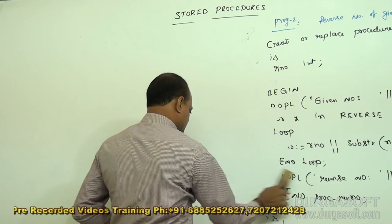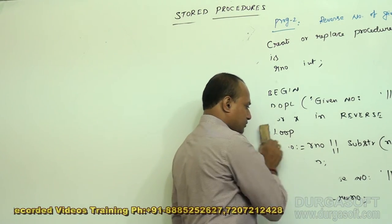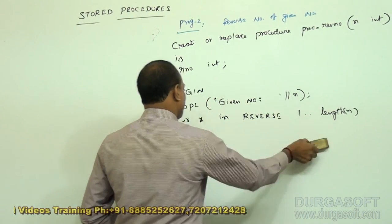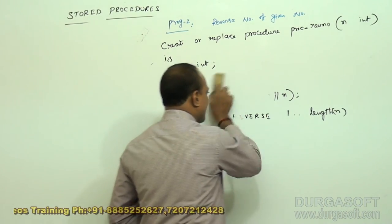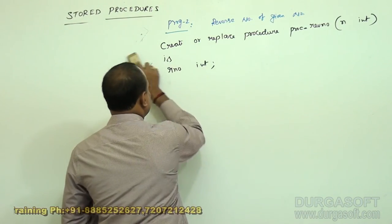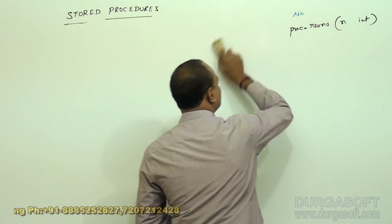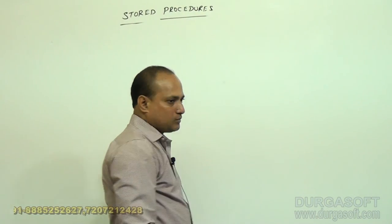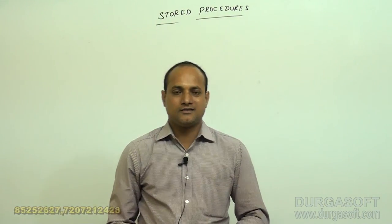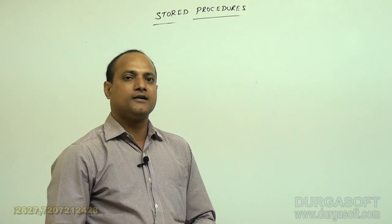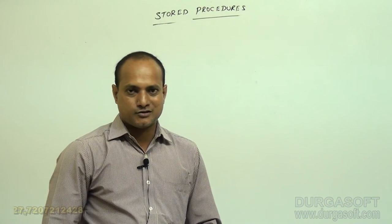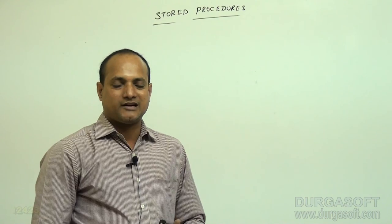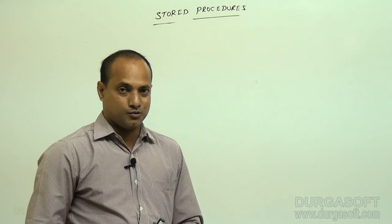To summarize: if you know the range — how many times to execute the loop — use a FOR loop. If you don't know the range but want to repeat based on a condition, use a WHILE loop. If you want to execute unconditionally at least once, use a simple loop. We will see the hands-on part in the next video about conditional statements, procedure calling statements, and loops. Thank you.